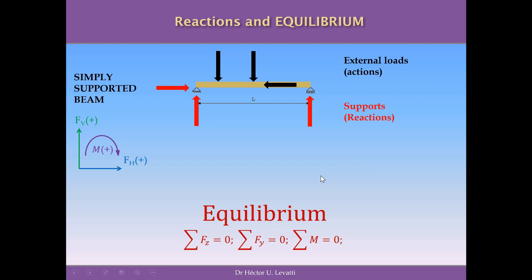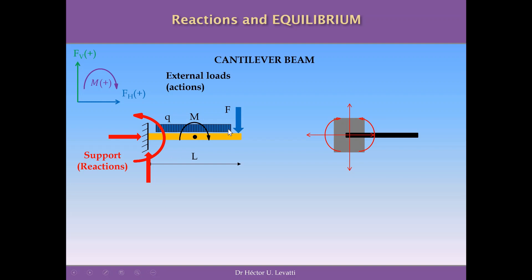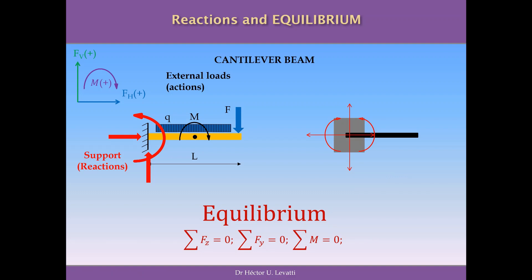Similarly, for a cantilever beam, the fixed support introduces reactions: a horizontal reaction, a vertical reaction, and additionally a moment reaction, because this support also restricts rotation. To establish the values of these reactions, we again use the three equations of equilibrium: sum of horizontal forces equals zero, sum of vertical forces equals zero, and sum of moments around a point equals zero.